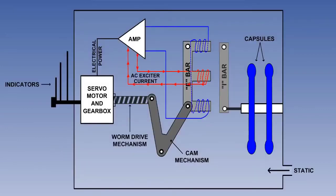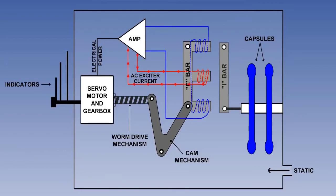A further refinement of the pressure altimeter is the servo-assisted altimeter, which gives improved accuracy, particularly at high altitudes, where the change in air pressure is much smaller than at low altitudes for a given change in height. The principle of the servo-assisted altimeter is that direct mechanical linkage between the aneroid capsules and the pointer is replaced with an electromagnetic system. Minute movements of the capsules can be sensed by this system and the movements converted into electrical current by an electromagnetic pick-off.